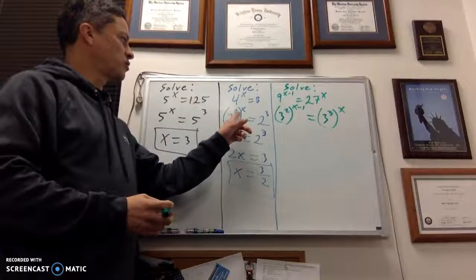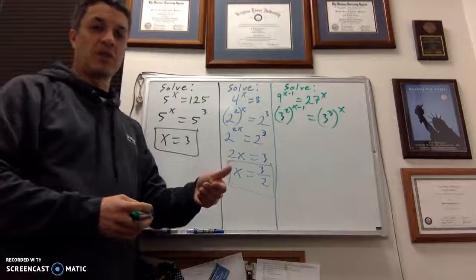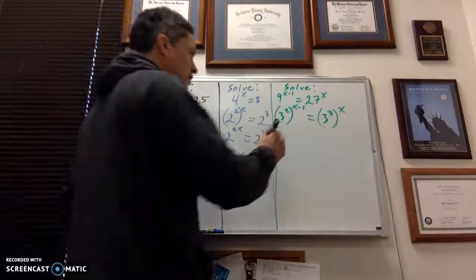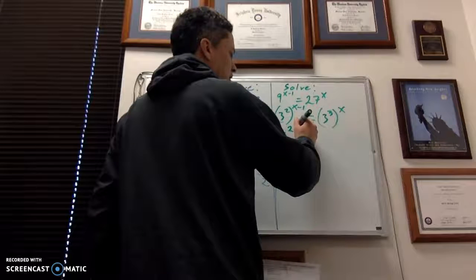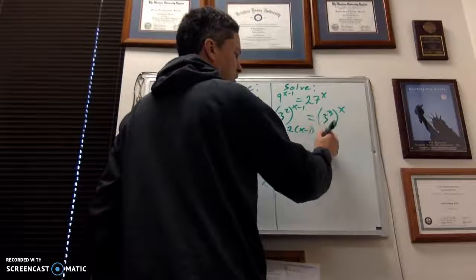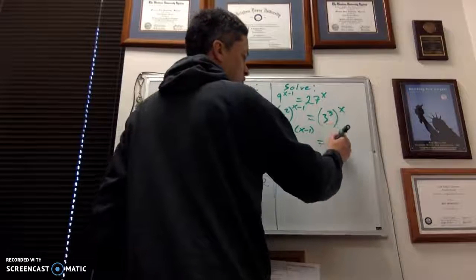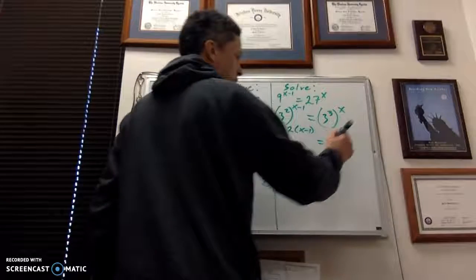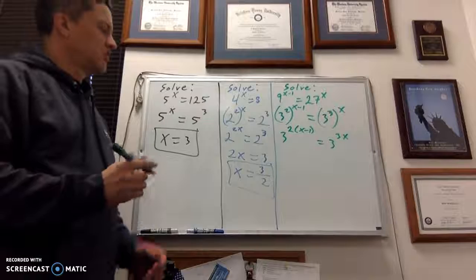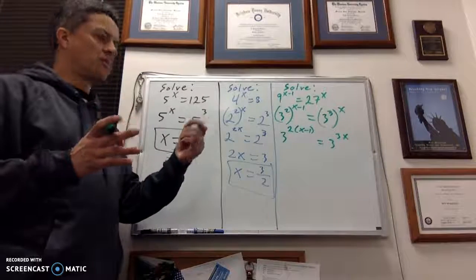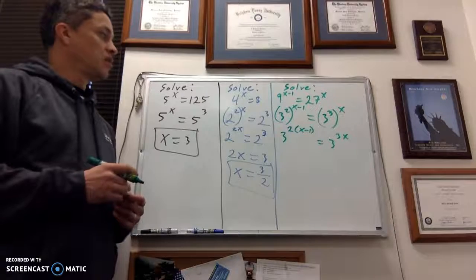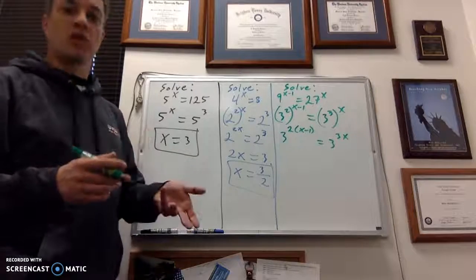Now like I did on this previous problem, where a power raised to a power means you're going to multiply the powers, I'm going to do the same thing. I'm going to change my left-hand side of the equation so it's 3 to the 2 times the quantity of x minus 1 equaling 3 to the 3x power. So I've got like bases. My exponents have gotten multiplied like they need to be, so I can just work with the exponents and ignore the bases.